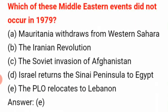Which of these Middle Eastern events did not occur in 1979? The answer is E: the PLO relocates to Lebanon.